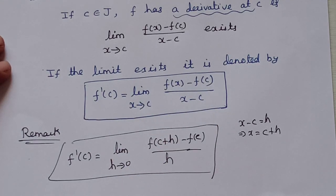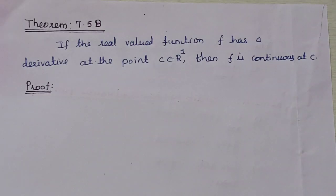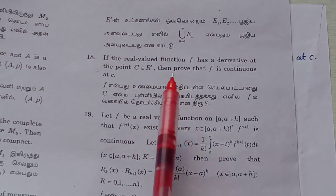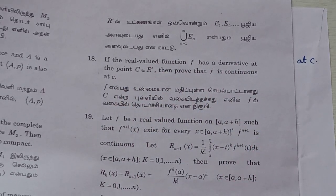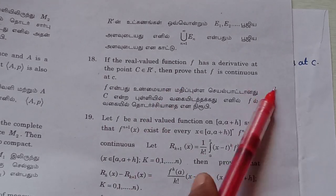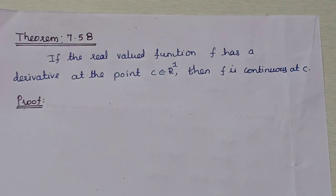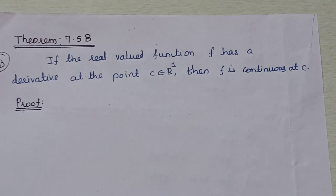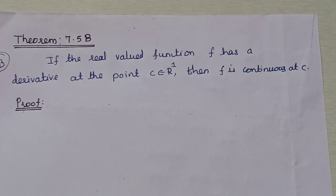Now, if f has a derivative at c, then f'(c) exists, which means the right-hand side limit exists. This is a university 5-mark question. Look at the November 2023 question paper, Part B: if the real-valued function f has a derivative at the point c belonging to R1, then prove that f is continuous at c. F is differentiable at c — that is the given. F is continuous at c — that is what we must prove.